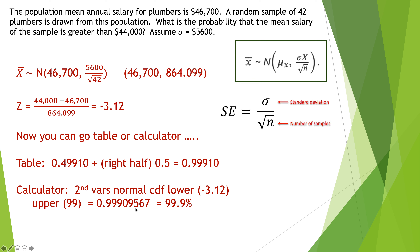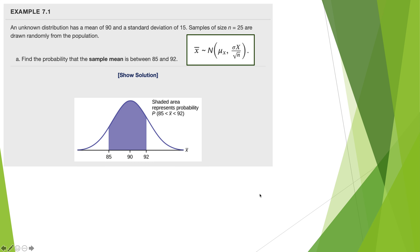Next, Example 7.1: an unknown distribution has a mean of 90 and a standard deviation of 15. Samples of size n = 25 are drawn randomly from the population. I wish it were 30, because the Central Limit Theorem is really supposed to be used for samples of 30 or more, but we'll go with 25 on this one. Find the probability the sample mean is between 85 and 92.